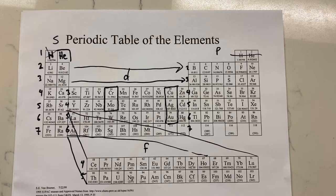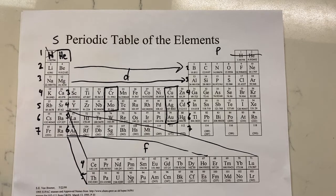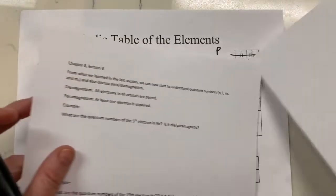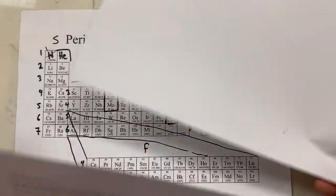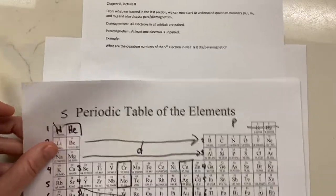So in the last section, we learned a lot about electron configuration. Now we're going to look at quantum numbers for specific electrons. We're also going to look at diamagnetism and paramagnetism. I don't really give too much of an introduction here — the best way to go about this is just to do it.